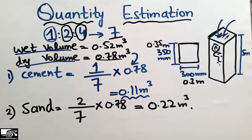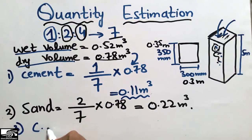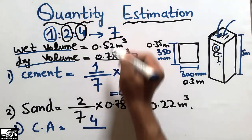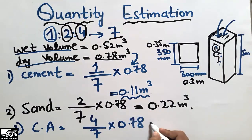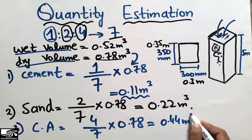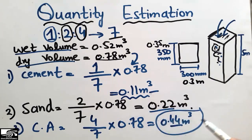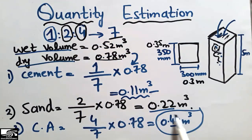To find the coarse aggregate quantity, we use the coarse aggregate ratio of 4 divided by the total ratio of 7, multiplied by the dry volume of 0.78. We get 0.44 cubic meters. The coarse aggregate is the highest volume at 0.44, compared to sand at 0.22 and cement at 0.11, because its ratio is the highest.